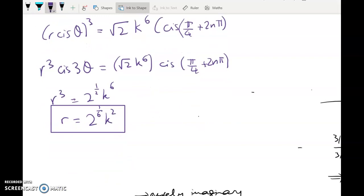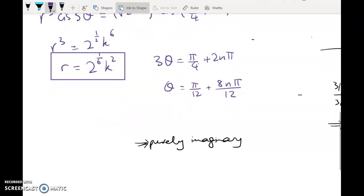And now theta, 3 theta, is equal to pi on 4 plus 2n pi. So theta will equal pi on 12 plus 2n pi on 3. Now I know that I'm going to be needing to substitute values in here, so I'm going to write that 2n pi on 3 as 8n pi on 12, and that makes it a wee bit faster. What do I do now? Well, I've got to get three solutions, so I'm going to plug in three values for n.